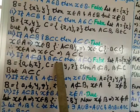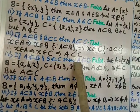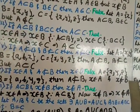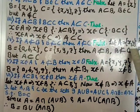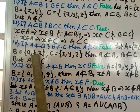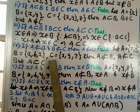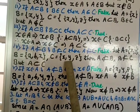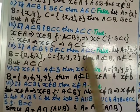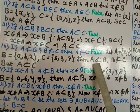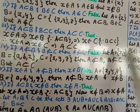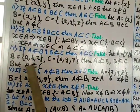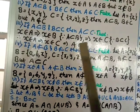Statement 4: if A ⊄ B and B ⊄ C then A ⊄ C. This is false. Counterexample: let A = {x, y}, B = {a, b, x}, C = {x, y, z}. Then A ⊄ B and B ⊄ C, but we can see that A = {x, y} is part of C, so A ⊆ C. Hence the statement is false.